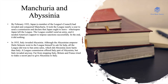In the Manchurian Crisis, by February 1932 Japan — a member of the League's council — had essentially invaded and conquered Manchuria, which was part of Chinese territory. It took the League nearly a year to send a commission and declare that Japan ought to leave, whereupon Japan left the League. The League couldn't send an army to enforce this departure, and it needed America's support to impose sanctions successfully; in the end it essentially did nothing.